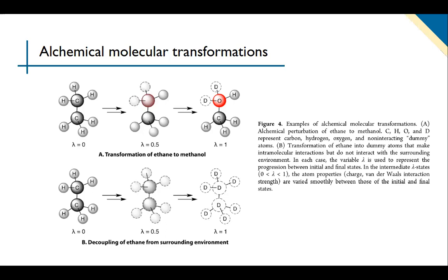There are two types of transformation. In figure A, it moves to related chemical spaces. In figure B, it moves to dummy atoms that are invisible to the surrounding environment.